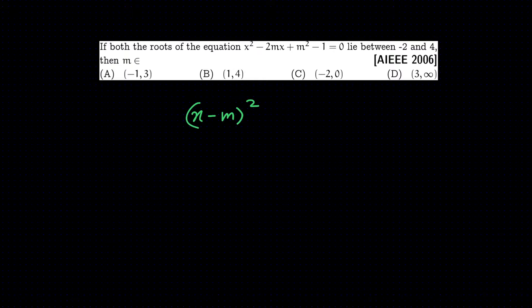If both the roots of the equation x squared minus 2mx plus m squared minus 1 equals 0 lie between minus 2 and 4, then m belongs to — we can write this as x minus m whole squared equals 1, so x equals m plus or minus 1. These are the two roots.